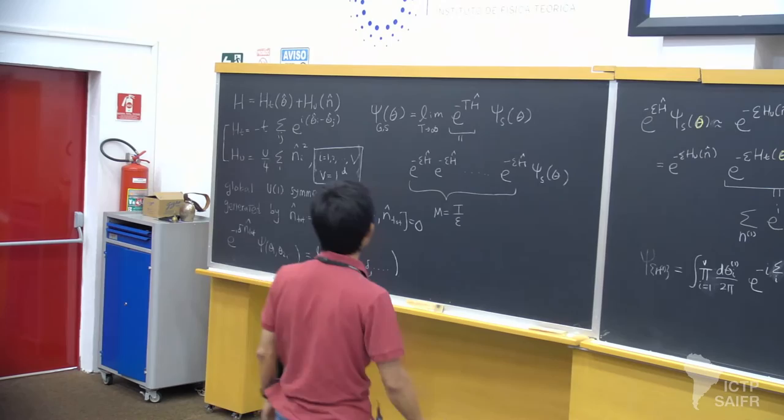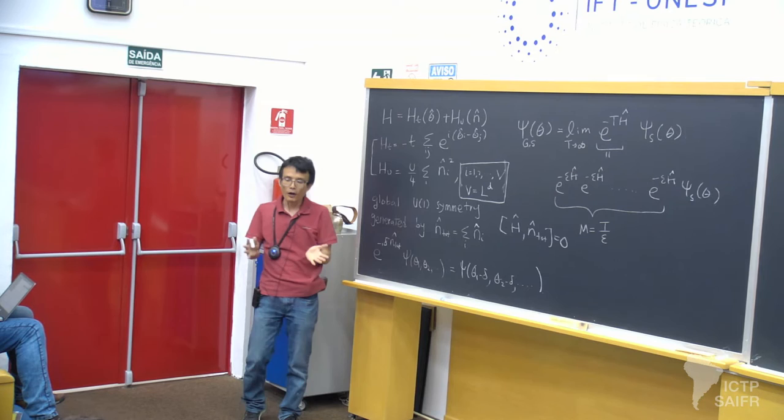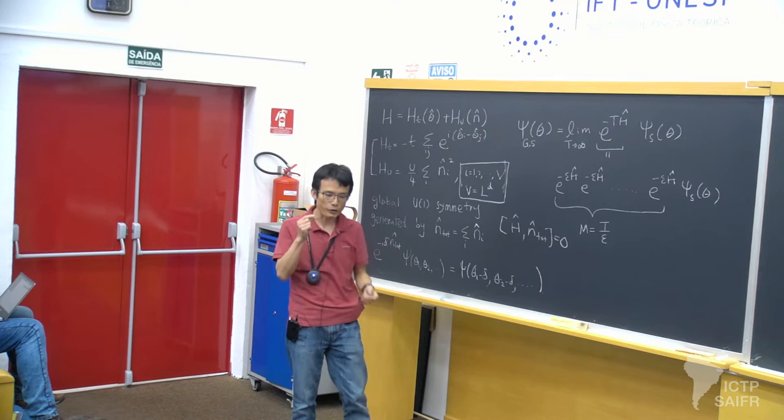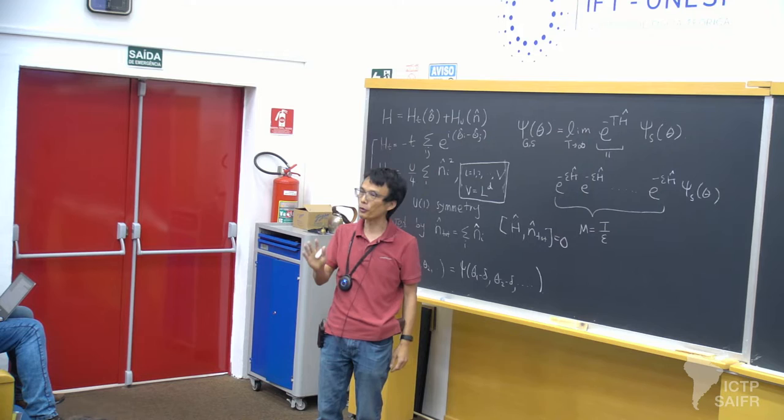Our goal is to understand what kind of ground states can arise from this simple-looking Hamiltonian. In this mini-course, we are only going to consider the ground state, so we are explicitly considering the T equals zero limit.